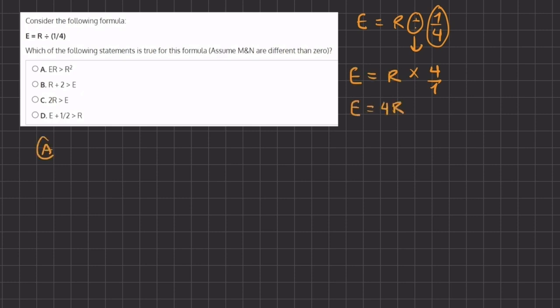Now let's take a look at our answers. A states that E times R is greater than R squared. Instead of E we're going to plug in 4R, which we just found, times R is greater than R squared. We have 4R times R which simplifies to 4R squared is greater than R squared, and this statement is true because this 4 creates a 4 times larger number than the right hand side. So A is going to be our final answer.